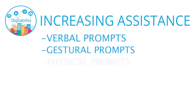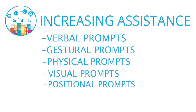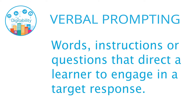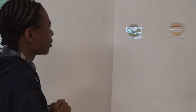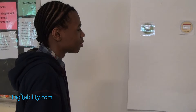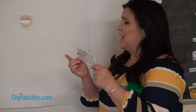The first prompt demonstrated is a verbal prompt. A verbal prompt can be a word, a set of instructions, or questions that direct the learner to engage in a target response. Dawn's use of verbal prompting gives her students key words or phrases that lead them to the correct answer — for example, 'Types of browsers would be Google Chrome, Safari, and Internet Explorer. But how would we know how they look when we look for the — what?'